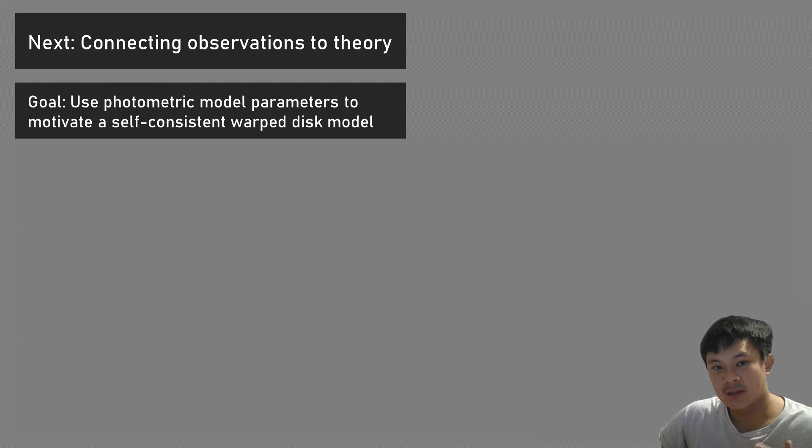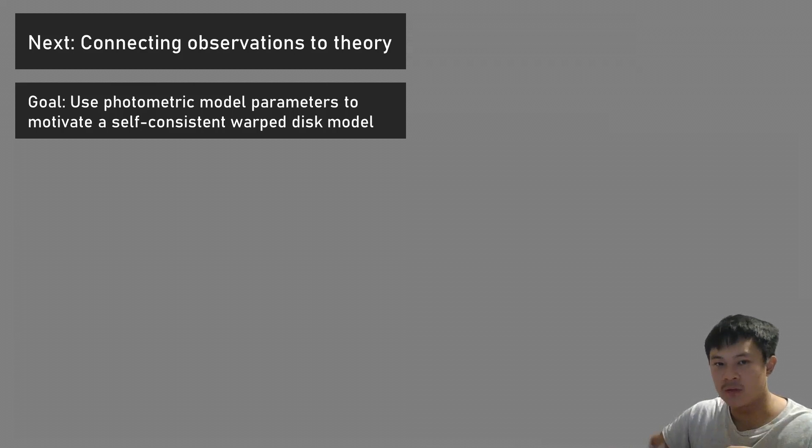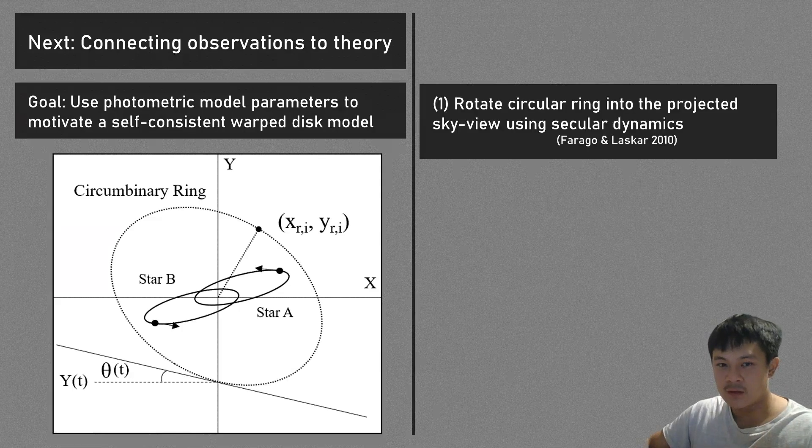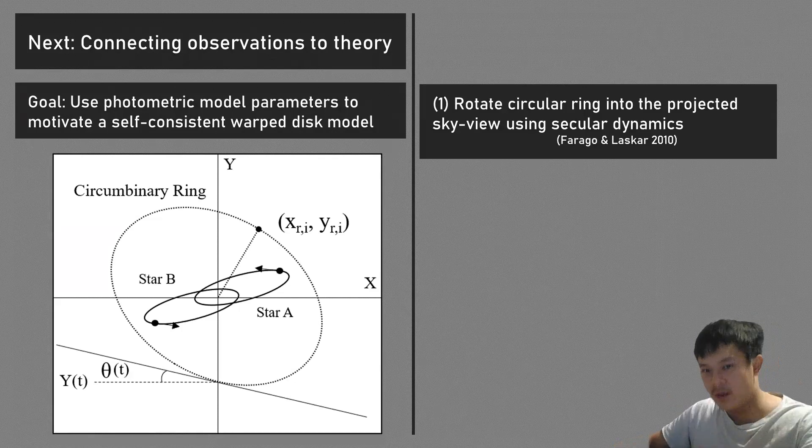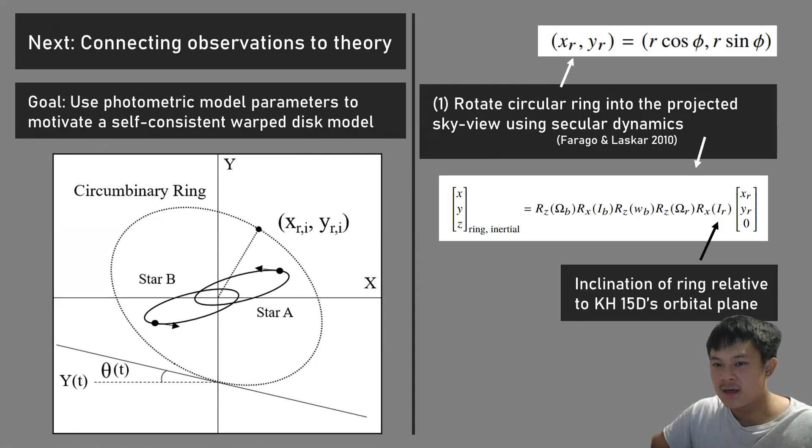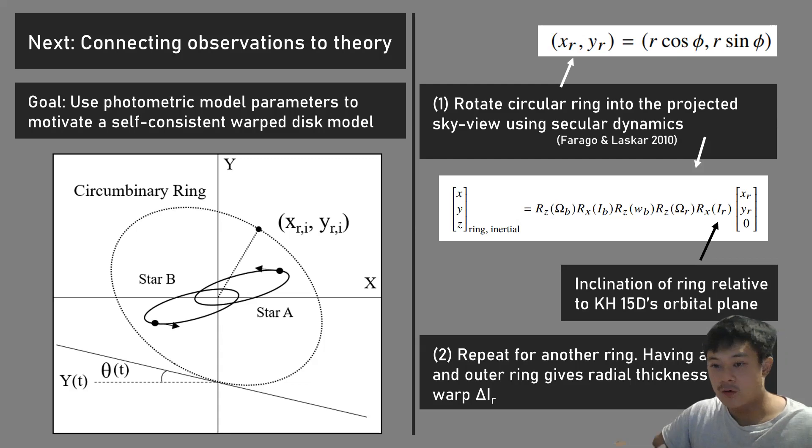To connect these observations to theory, we generate a self-consistent warp disk model. Basically, we look at how a test particle orbits an eccentric binary. We do that by rotating the circular ring using secular dynamics, rotation matrices. What we care about is the inclination of the ring relative to KH15D's orbital plane. To make a disk instead of just a ring, you repeat it for another ring, so you have an inner ring and an outer ring, giving the disk radial thickness as well as warp delta i_r.